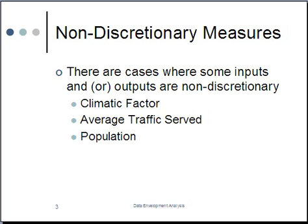These models are actually used to treat some inputs or outputs that are not controlled by the management of the DMU. For example, the weather, you cannot control the weather. The average traffic served that we discussed in the highway example. For example, the population, you do not have control over that.